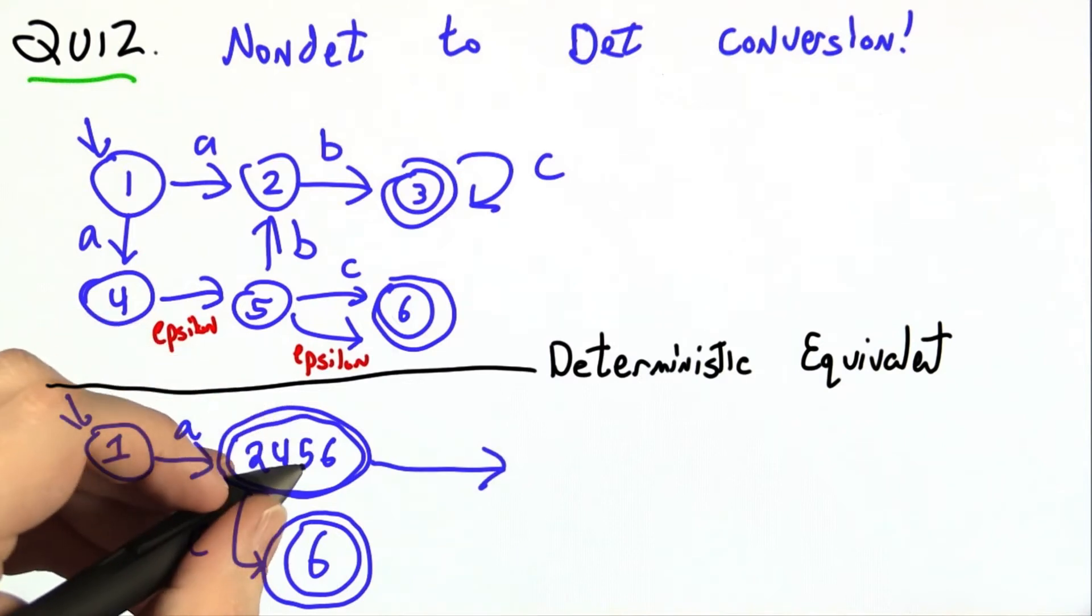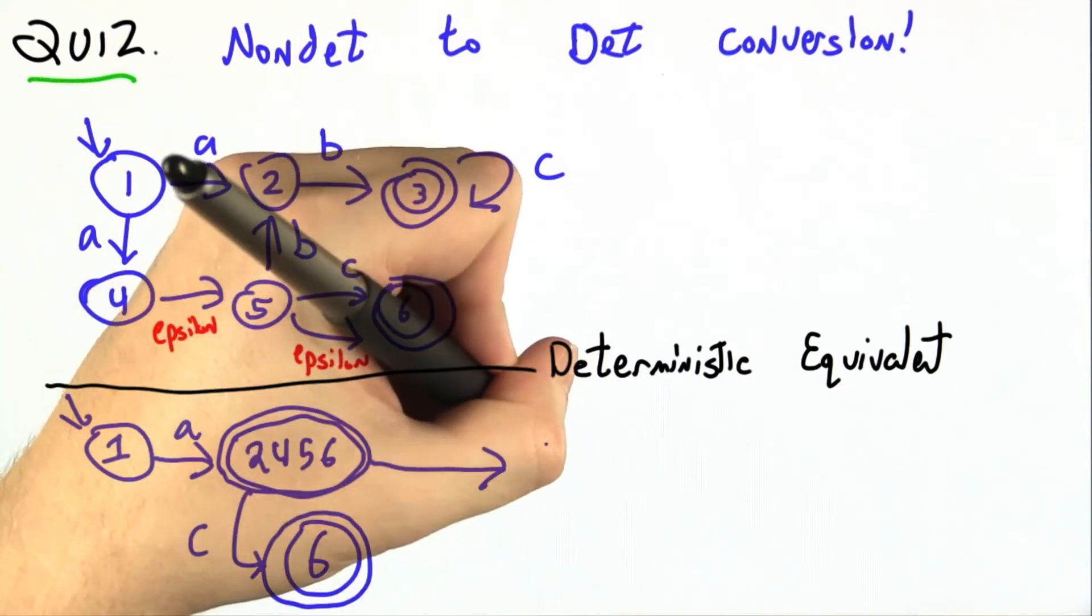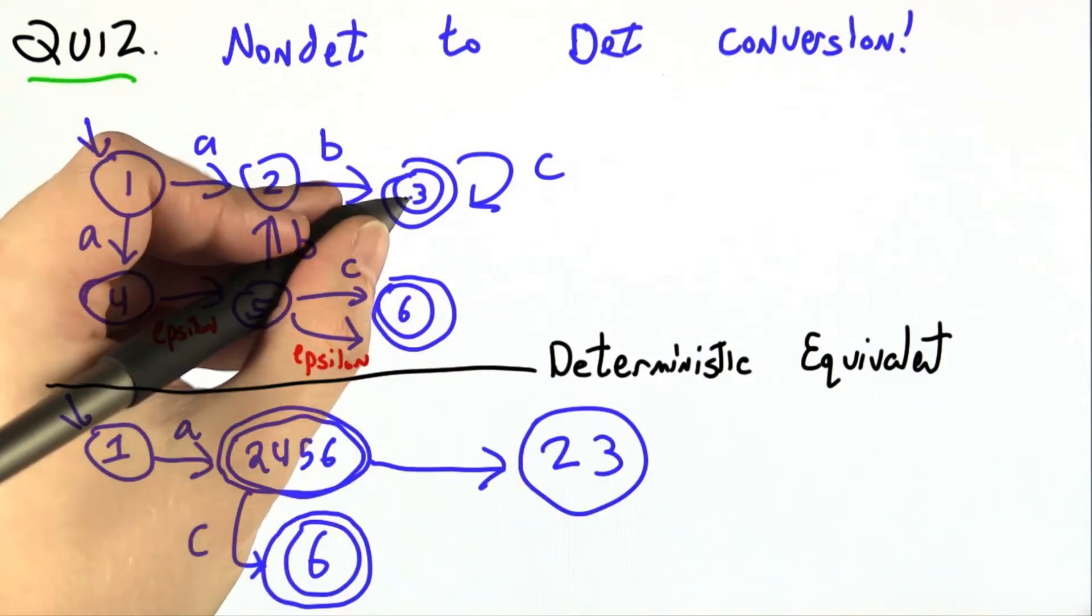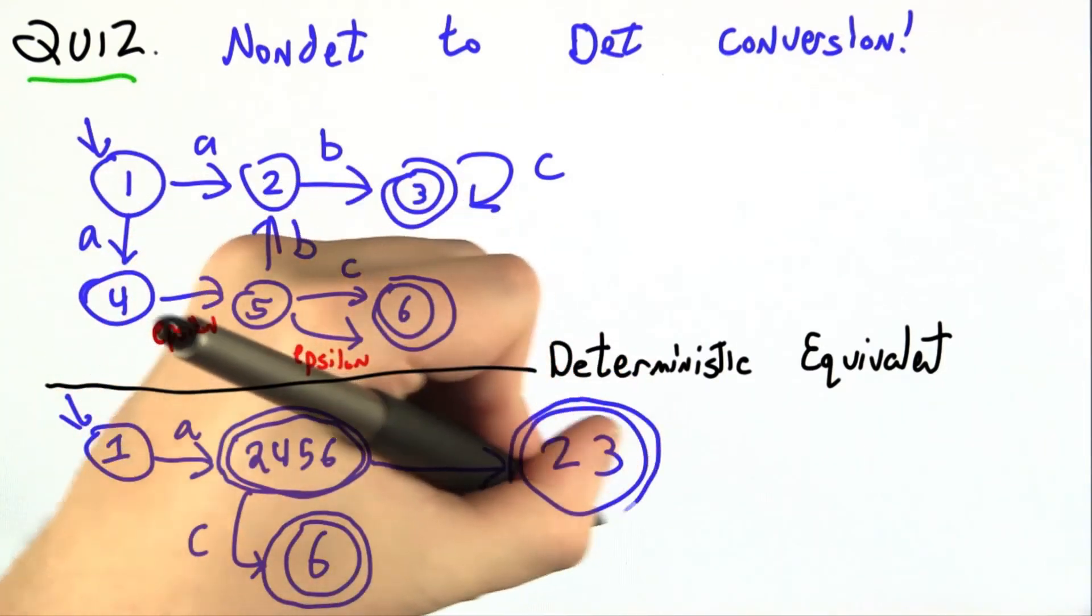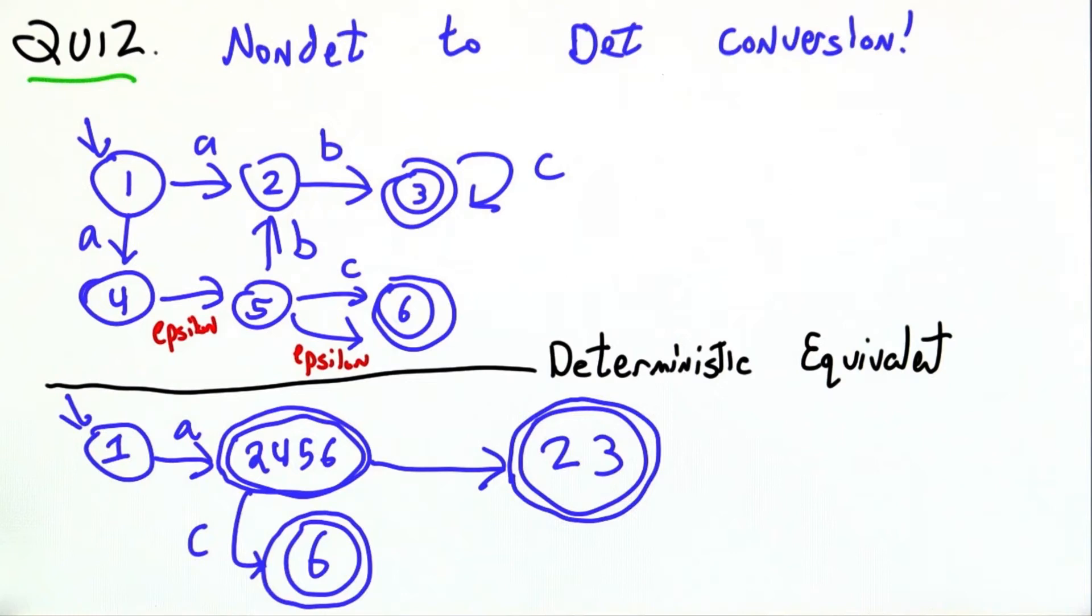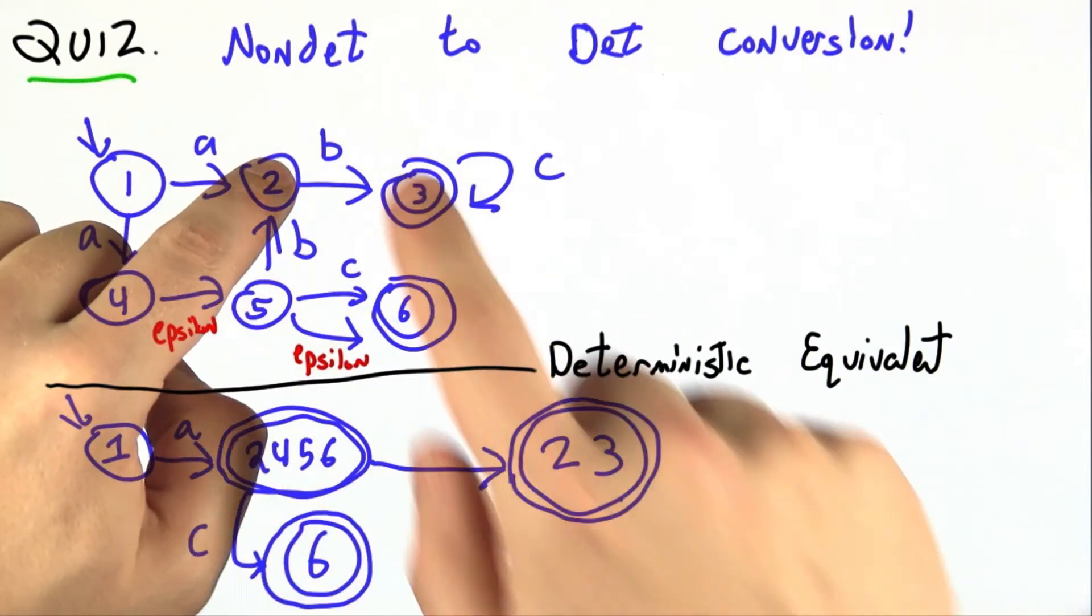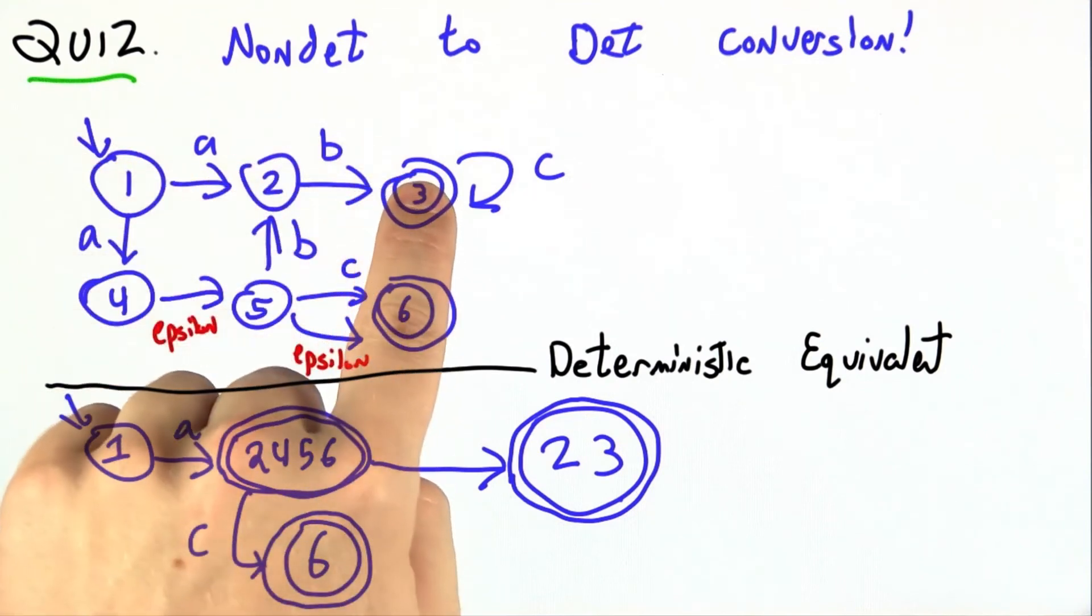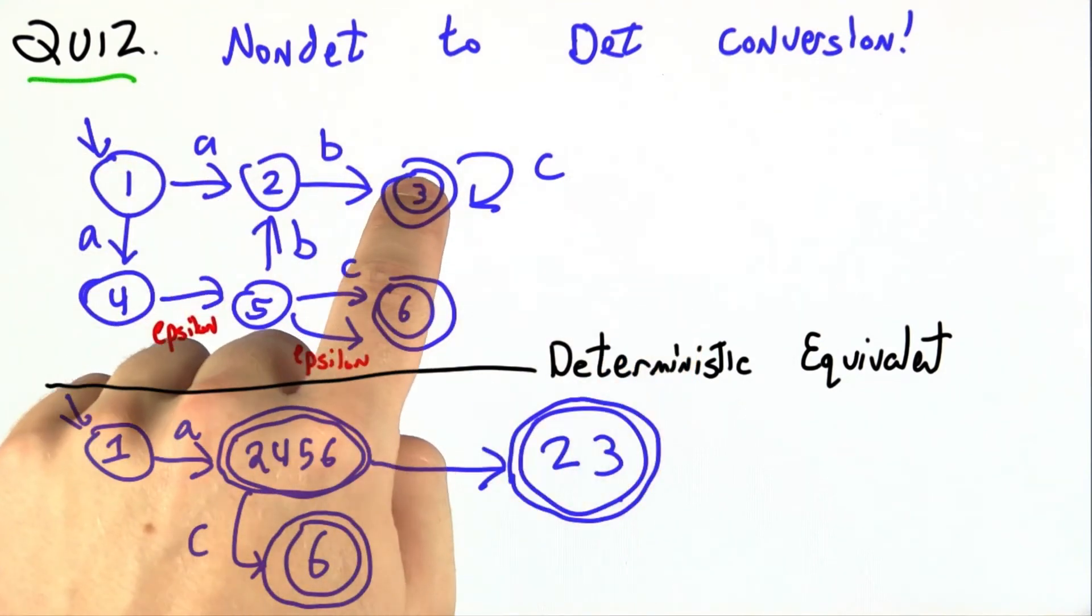Now there are some other ways to get out of 2, 4, 5, and 6, and when we do, we might be in states 2 or 3. Since 3 is an accepting state up there, 2 or 3 is an accepting state down here. If I'm in 2 or 3, on a B, from 2 I go to 3, and on a C, I'd fall off the world. So we'd end up in state 3.